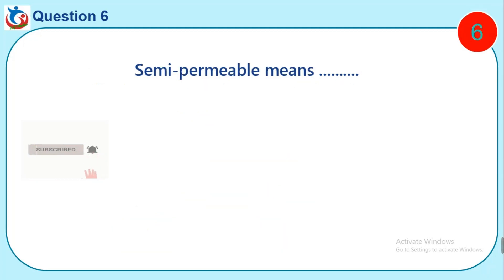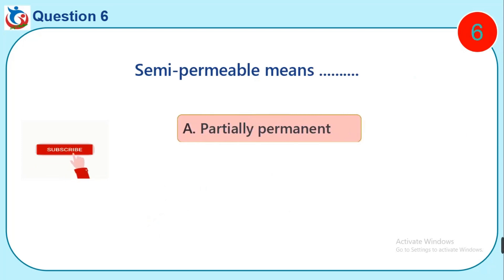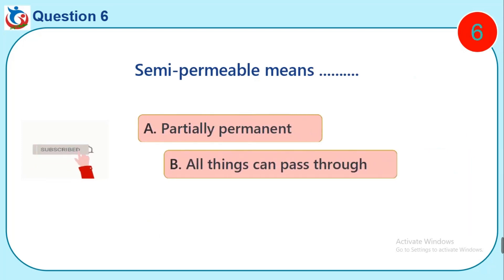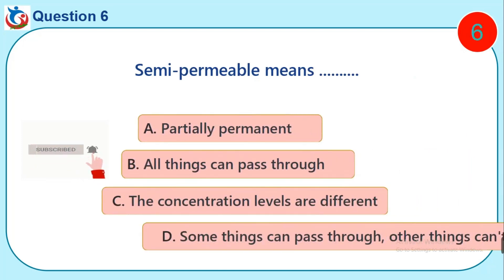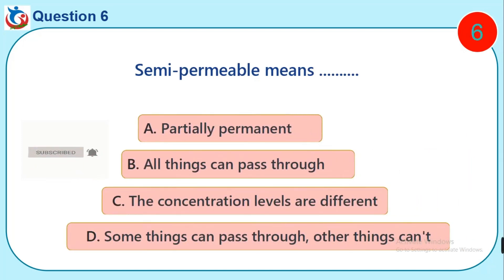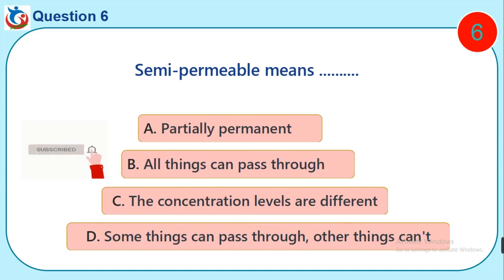Question 6. Semi-permeable means dash. A. Partially permanent. B. All things can pass through. C. The concentration levels are different. D. Some things can pass through, other things can't.